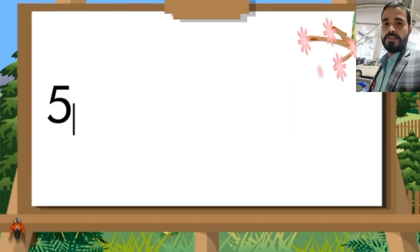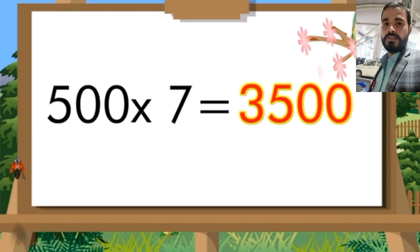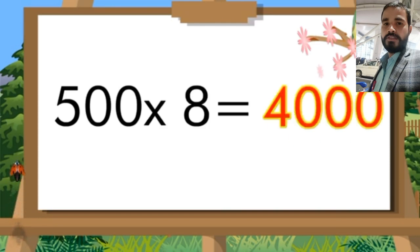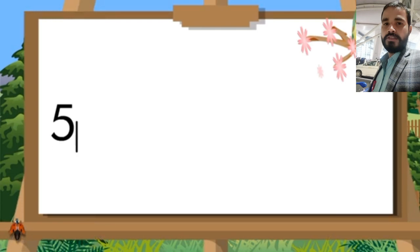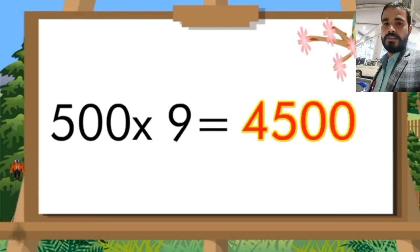500 sevens are three thousand five hundred. Five hundred eights are four thousand. Five hundred nines are four thousand five hundred.